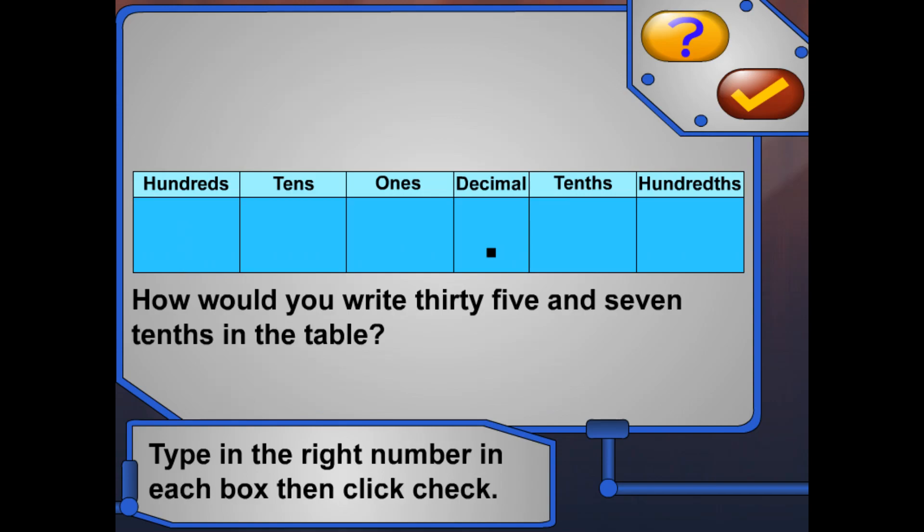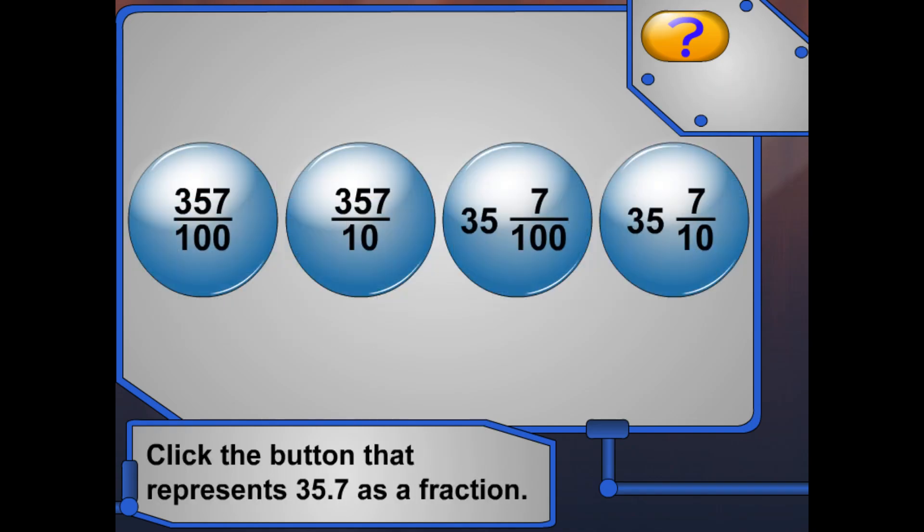Okay, now tell me, how would you write thirty-five and seven-tenths in the table? Type the right number in each box, then click check. All right! How would you write thirty-five and seven-tenths as a fraction? Way to go!